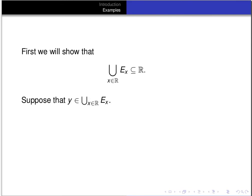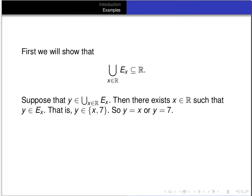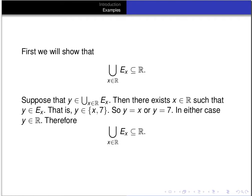Suppose that y is in the union of the E_x's. That means y has to be in at least one of the E_x's. To be in the union, there must exist a real number x so that y is in E_x. Now, E_x is just the set consisting of x and 7. So y is an element of the set consisting of x and 7, which means y equals x or y equals 7. In either case, y is a real number. So we've proved that if y is in the union, then it's in the real numbers, meaning the union of the E_x's is a subset of the real numbers.